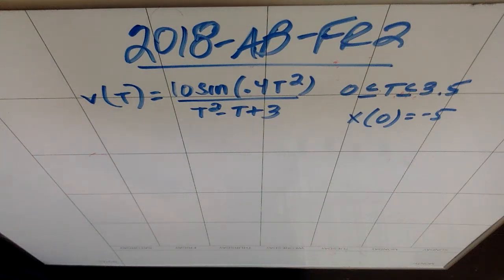We are back at AP Review. This is 2018 AB Free Response 2, which is a particle motion problem. A particle moves along the x-axis with velocity given by V of t equals 10 sin of negative t plus 2 over t squared plus 3, for values from t equals 0 to 3.5 inclusive, and the position of the particle is negative 5 when t is 0.